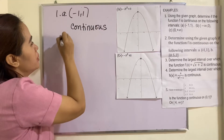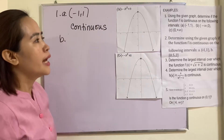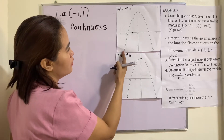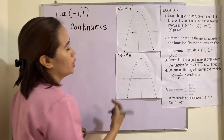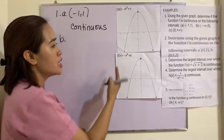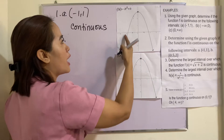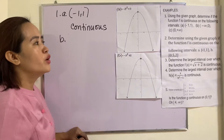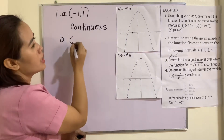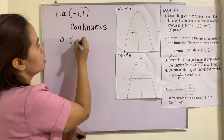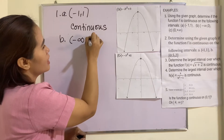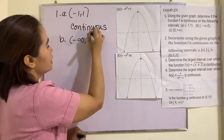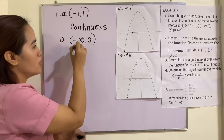Letter B: negative infinity to 0. Again, we can trace this graph without lifting our pen. Therefore, we can say that the function is continuous at this interval: negative infinity to 0.